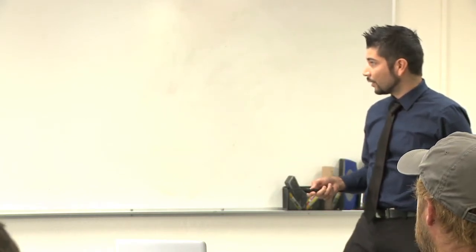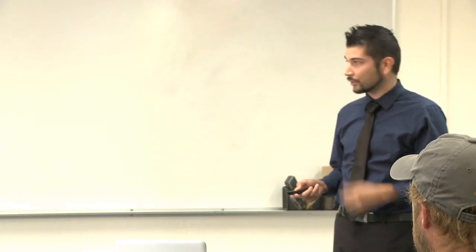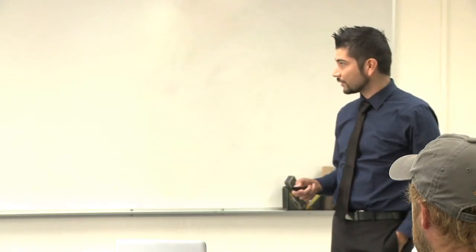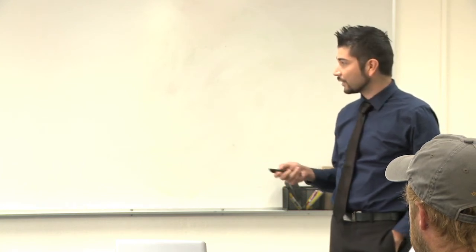This will also help with positive identification, avoiding misidentification with look-alikes. The most common one is Xyleborus saxesenii, which creates a small entry hole as well — it's a little bit smaller, but they're often confused for polyphagous or Corotio shot hole borer. This type of diagnostic assay confirming the identification accurately will help with misidentification.